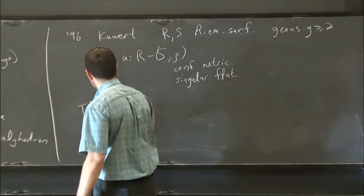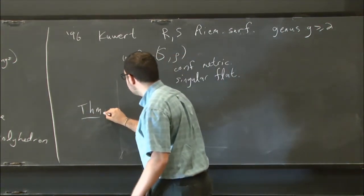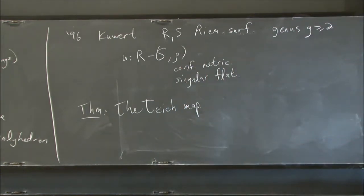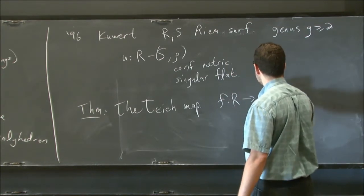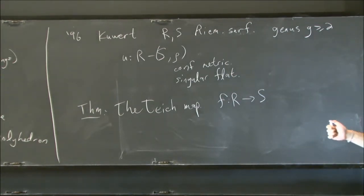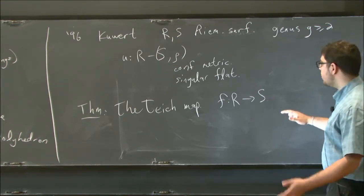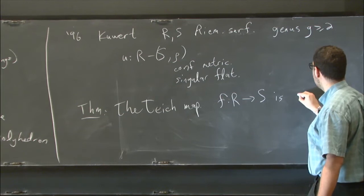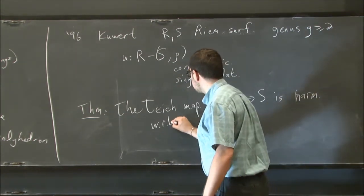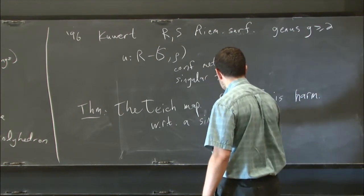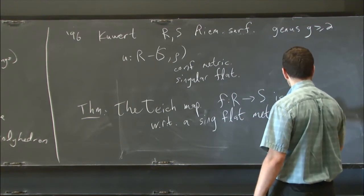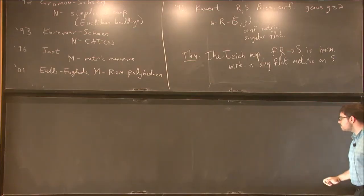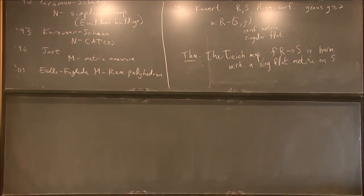And in fact, his theorem, another theorem he proved in this paper, is that the Teichmuller map, so this is the map F between these spaces, which comes closest to being conformal in its isotopy class. It's a diffeomorphism. And the dilatation is measuring how far it is from conformal. And this is closest. He proved that this map is harmonic with respect to a singular flat metric on S, which is where the theory of harmonic maps in singular spaces enters Teichmuller theory. So this is where I'm focusing, at least for today.